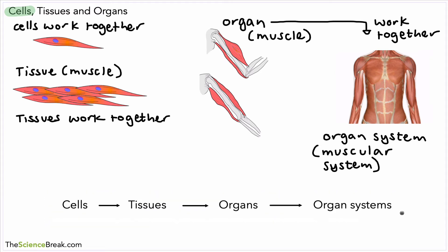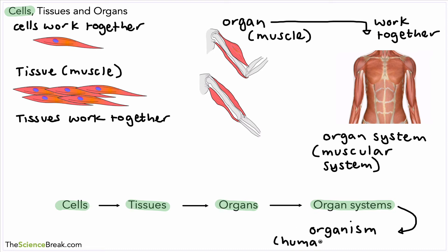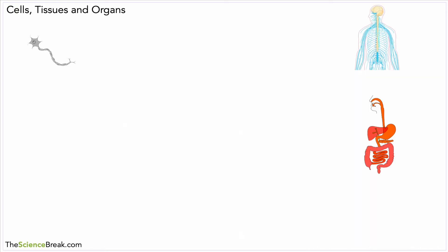So there are lots of different systems that make up the body. To summarise: cells of a particular type will work together to form tissues, tissues will work together to form organs, and organs will work together to form organ systems. There's one layer on top of that as well — organ systems can work together to make an organism, a whole living thing. Examples include humans, trees, fish, and of course lots of different living organisms on the planet.